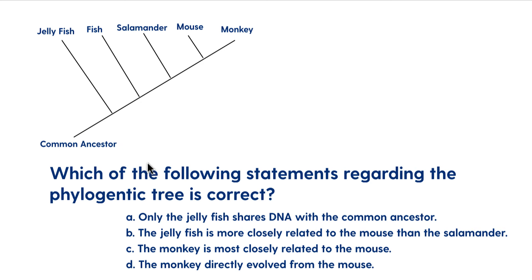B says the jellyfish is more closely related to the mouse than the salamander. So here's the jellyfish and the salamander is closer to it than it is the mouse. So the jellyfish is going to be more closely related to the salamander compared to the mouse because it's further along. The mouse is further along so it's more distant. And so B is wrong, because it says that the jellyfish is more closely related to the mouse. It's actually the other way around.